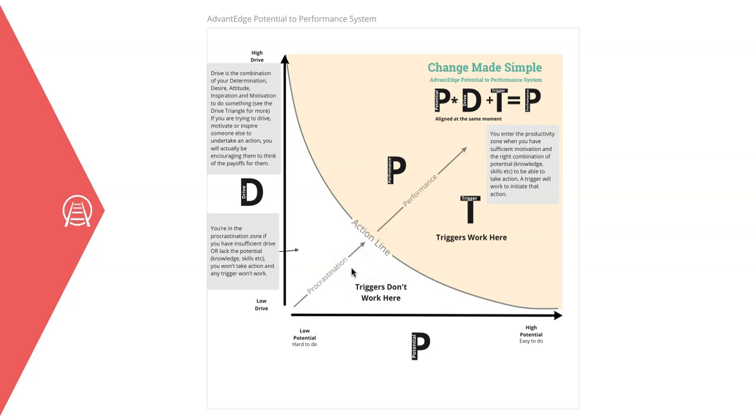And if someone is below the action line, we need to get them above it for the trigger to initiate action. Either we need an increase in drive, or the action needs to be easier to perform, or both.